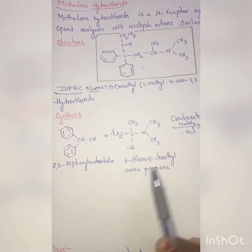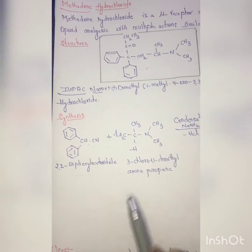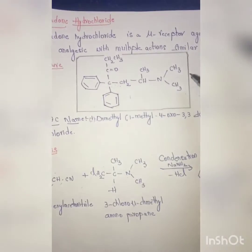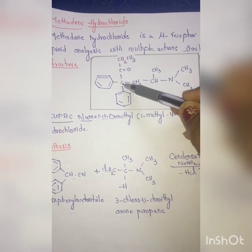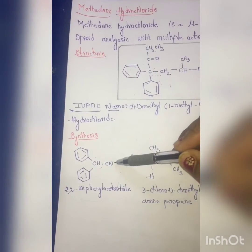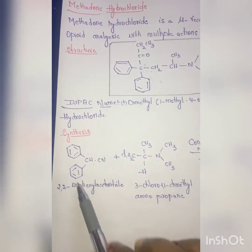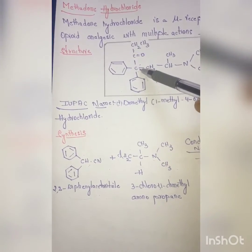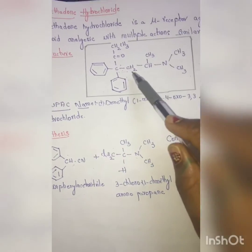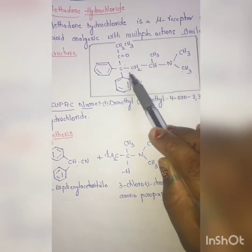First, we'll write the structure of 2,2-diphenyl acetonitrile. This compound has two phenyl groups attached to the same carbon, along with a CH and a CN group.